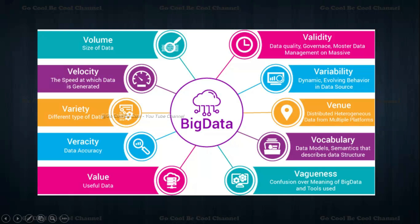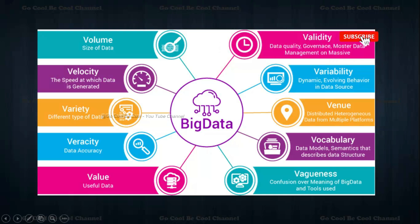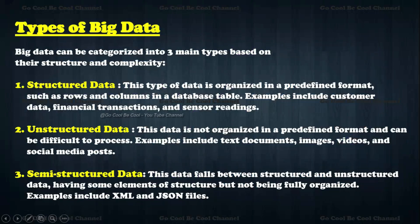In addition to the five V's — volume, velocity, variety, veracity, and value — there are additional V's. The sixth V is validity, relating to data quality and governance. Then we have variability — dynamic, evolving behavior in data. Venue refers to where you are locating the data — distributed, heterogeneous data from multiple platforms. Vocabulary covers the data model and semantics that describe data structure. These make up the 10 V's of big data.